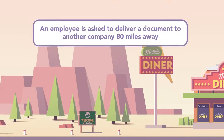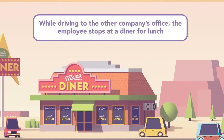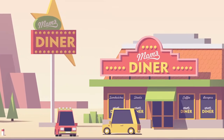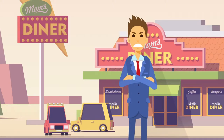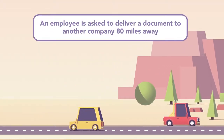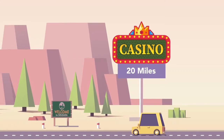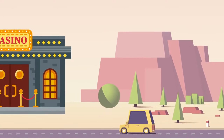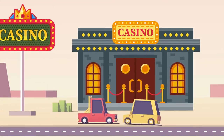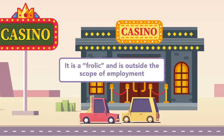Let's consider some examples. Example one: An employee is asked to deliver a document to another company 80 miles away. While driving to the other company's office, the employee stops at a diner for lunch. While driving in the diner parking lot, she hits a parked car. The employer probably would be liable for the property damage — stopping for lunch is a foreseeable and minor detour and it is still within the scope of employment. Example two: An employee is asked to deliver a document to another company 80 miles away. While driving there, the employee sees a road sign advertising a casino 20 miles off the interstate and takes a trip to the casino to gamble for a couple hours before resuming the delivery trip. While driving in the casino parking lot, she hits a parked car. The employer would probably not be liable for the property damage because driving 20 miles out of the way to gamble is not a foreseeable or normal part of making a delivery — it is a frolic and outside the scope of employment.